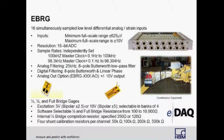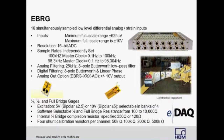The eBridge layer with 16-bit resolution can simultaneously sample 16 channels of low-level differential analog inputs. It is an excellent choice for measuring transducers with low-level signals or strain gauges. It has bipolar excitation capable of 5 and 10 volts. The eBridge can also measure quarter-bridge, half-bridge, and full-bridge gauges. It has internal completion for quarter-bridge strain gauges of the 120 and 350-ohm variety and four shunt calibrators per channel for 50, 100, 200, and 500-ohm shunts. The eBridge also has an optional analog out module that can output signals up to plus or minus 10 volts, typically used to supply a signal to some type of controller.